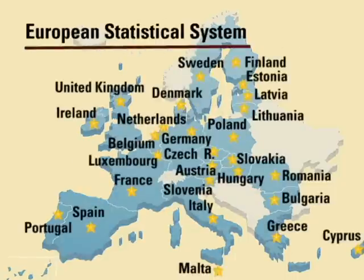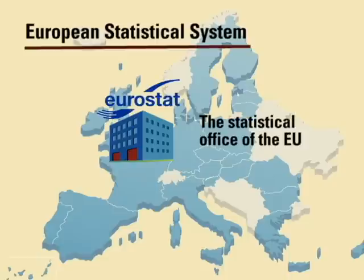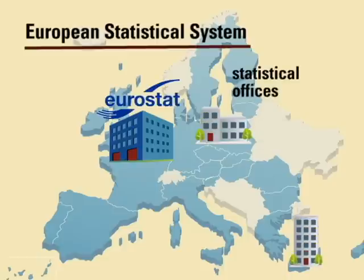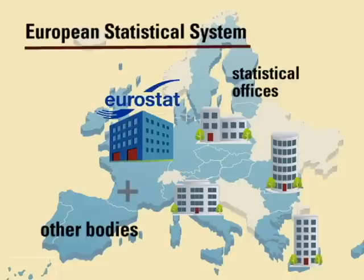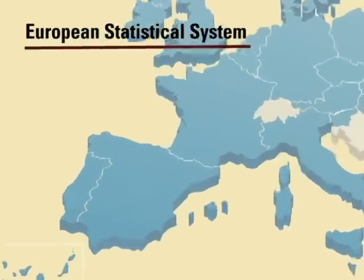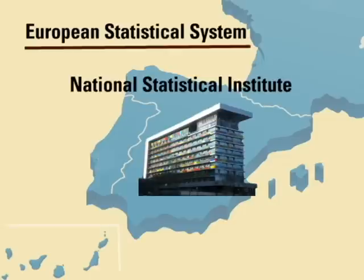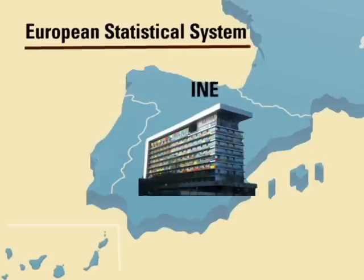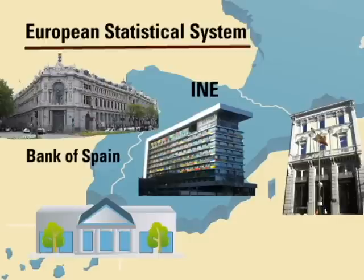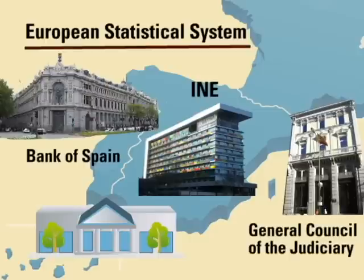The European Statistical System is formed by Eurostat, which is the statistical office of the European Union, the statistical offices of all member states, and other bodies entrusted with compiling European statistics. In the case of Spain, the National Statistics Institute plays a fundamental role, with the Bank of Spain, the General Council of the Judiciary, and the ministries that compile European statistics also forming part of the European Statistical System.